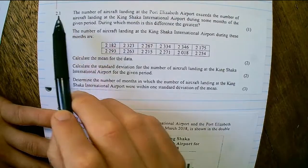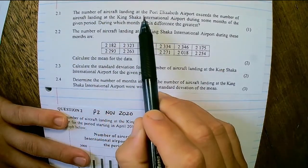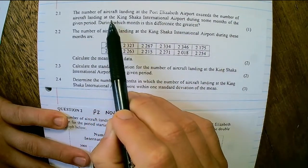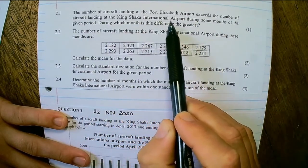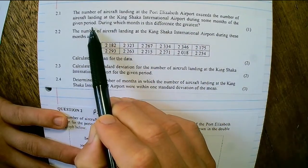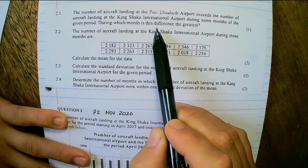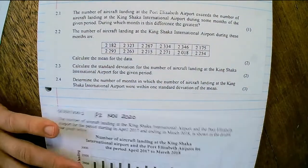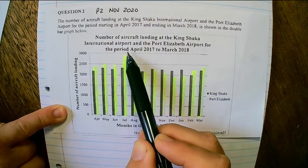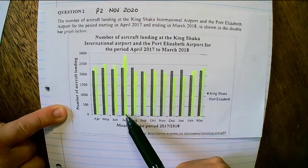Question 2.1: The number of aircraft landing at the Port Elizabeth Airport exceeds the number of aircraft landing at the King Shaka International Airport during some months of the given period. During which month is the difference the greatest? Looking at the given bar graphs we can see that the greatest difference is here in July.